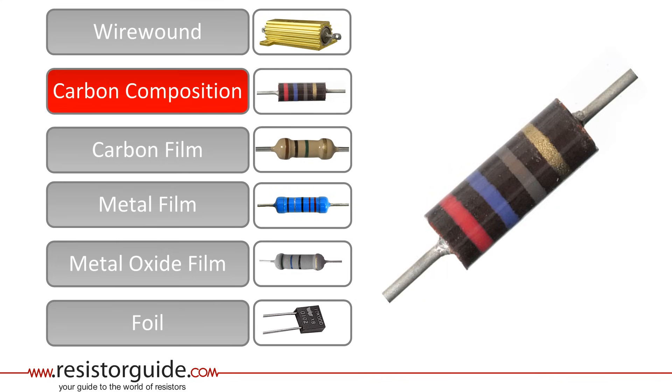Carbon composition resistors are constructed with a mixture of a non-conducting ceramic and fine carbon particles. They are also very old and used to be the most common resistor type a few decades ago. Although their properties are inferior to other types, regarding for example tolerance, they are still in demand for certain applications. For example, they have the ability to withstand high energy pulses.